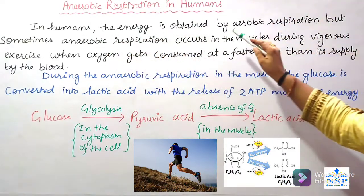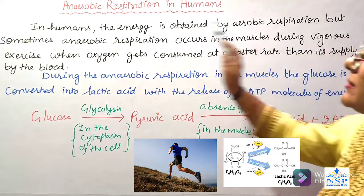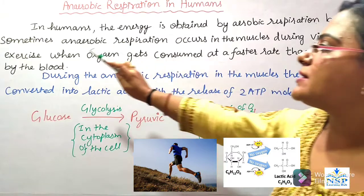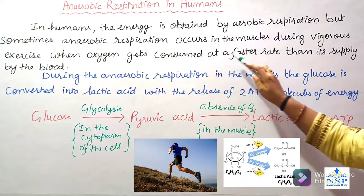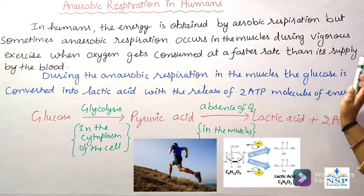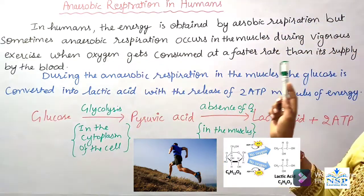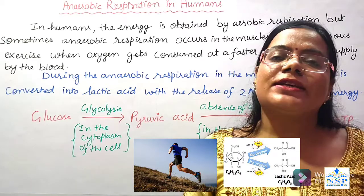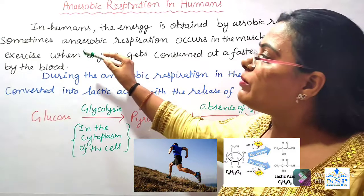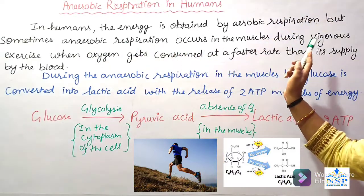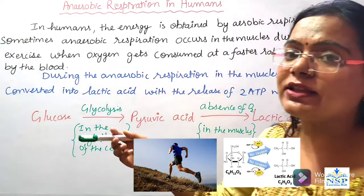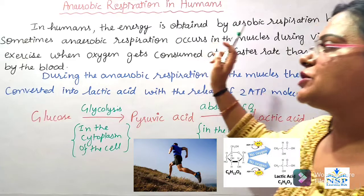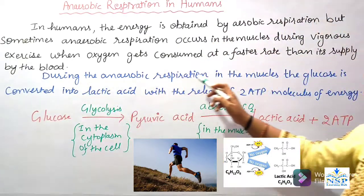In humans, energy is obtained by aerobic respiration. But sometimes anaerobic respiration occurs in muscles during vigorous exercise, when oxygen gets consumed at a faster rate than its supply by the blood. It means when we exercise, there will be pain in our body, and it is not possible for oxygen to reach our body through breathing.